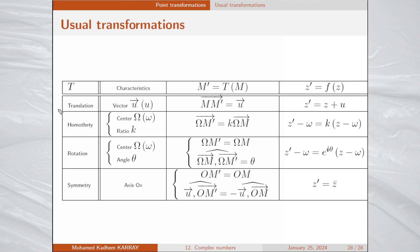Here are some examples. Consider firstly a translation of vector u with affix u. The image of a point M is a point M prime such that vector MM prime equals u. With complex numbers: z prime equals z plus u, since the affix of MM prime is z prime minus z, which equals u.